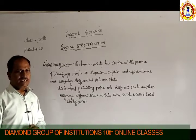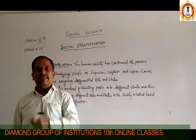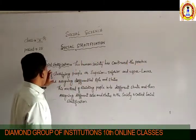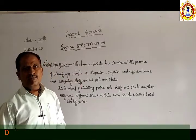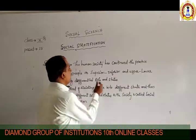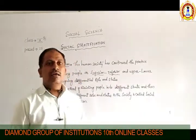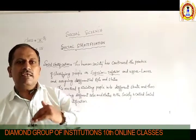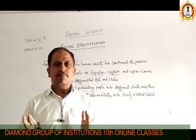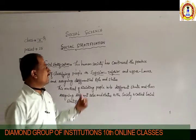The actual meaning of social stratification is: human society has continued the practice of classifying or dividing people according to the superior and inferior. Someone is having a high status and someone is having a low status. But both are human beings, yet individually they differ economically.